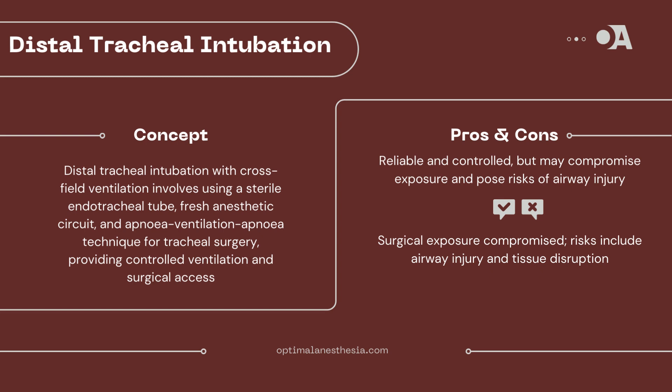First up, we have distal tracheal intubation with cross-field ventilation. This is a tried and tested method. A sterile reinforced endotracheal tube is used to intubate the distal trachea before surgery begins. Cross-field ventilation is then carried out using a fresh sterile anesthetic circuit placed over the surgical drapes and connected to the anesthesia machine. After initial intubation, the oral endobronchial tube is withdrawn and replaced with a regular endotracheal tube placed proximal to the stenosis. The surgery proceeds with the apnea-ventilation apnea technique, facilitating the resection and anastomosis of the trachea.